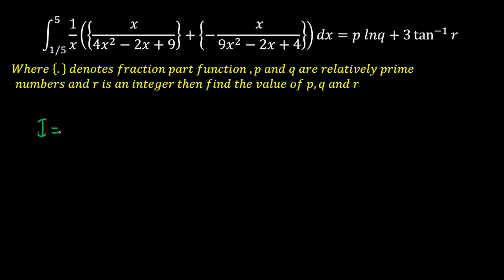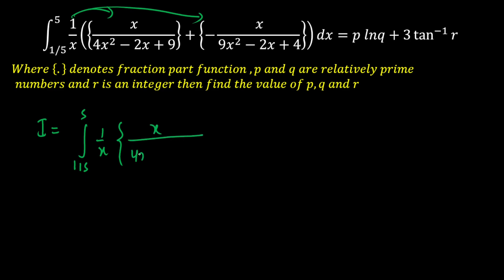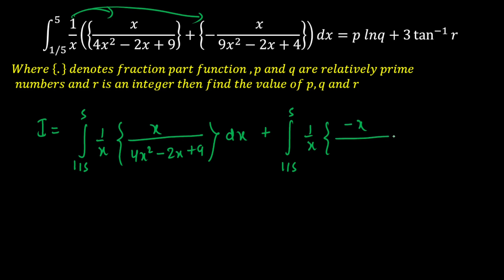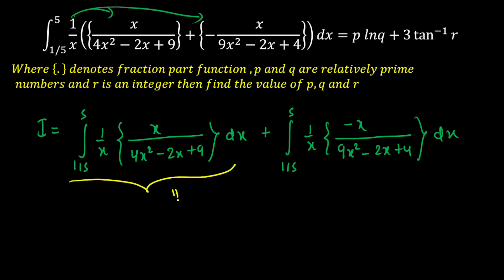Let's divide this integral into two parts. I am going to multiply 1/x by each term. So I will get: I1 = ∫(1/5 to 5) (1/x)·{x/(4x²-2x+9)} dx, and I2 = ∫(1/5 to 5) (1/x)·{(-x)/(9x²-2x+4)} dx.